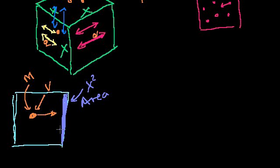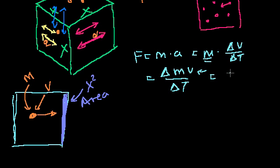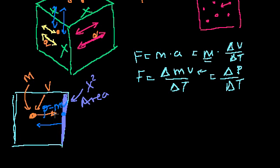The force will be exerted when the particle changes its momentum. We know that force equals mass times acceleration, which equals delta(mv) over delta t — that is, the change in momentum over change in time. The particle comes in with momentum mv, ricochets off the wall with momentum negative mv (same speed, opposite direction, assuming a perfectly elastic collision). So the change in momentum from that ricochet is 2mv.